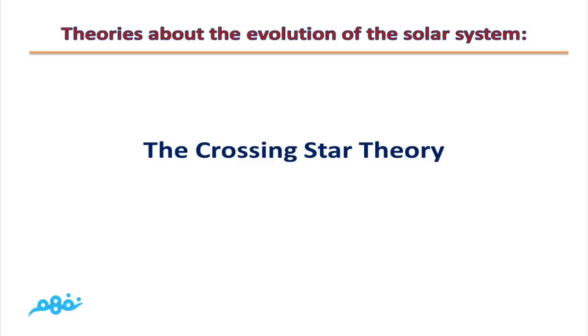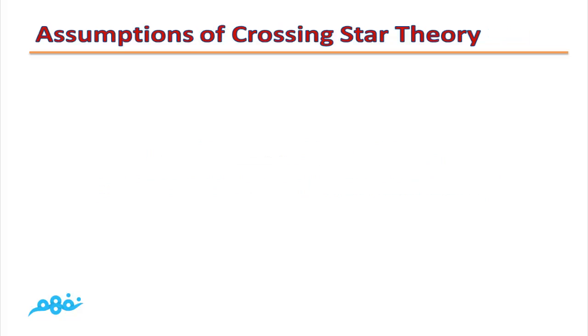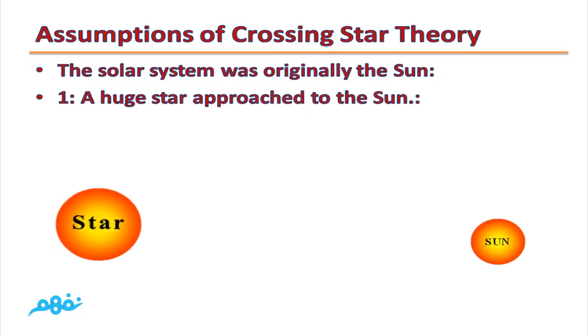The second theory is the Crossing Star Theory. The solar system was originally the sun. At the beginning, there was only sun without planets. According to this theory, a huge star approached the sun.